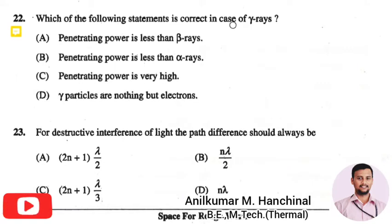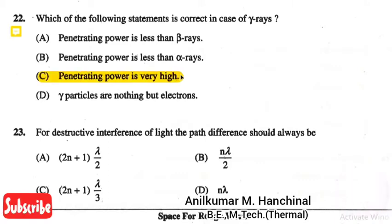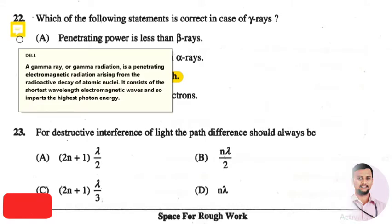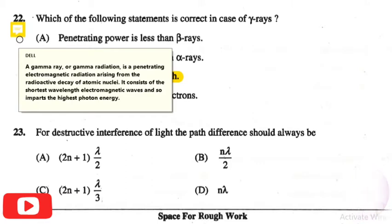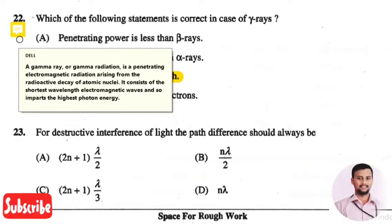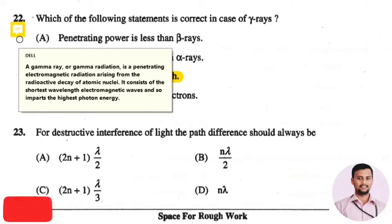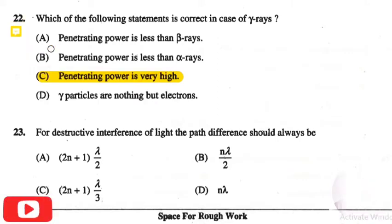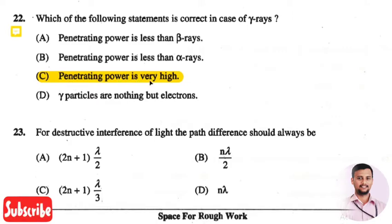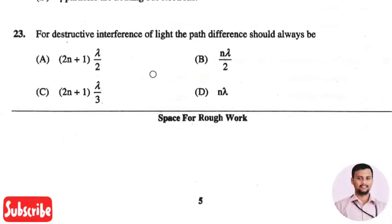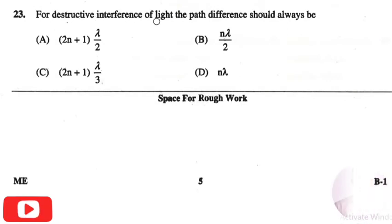The next question is: which of the following statements is correct in case of gamma rays? The right answer is option three: penetrating power is very high. Gamma rays or gamma radiation is penetrating electromagnetic radiation arising from the radioactive decay of atomic nuclei. It consists of the shortest wavelength electromagnetic waves and therefore imparts the highest photon energy, so in gamma rays the penetration power is very high.